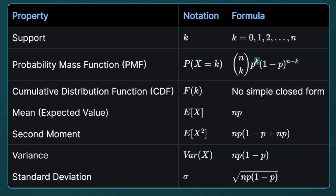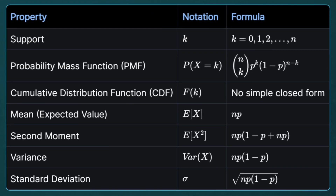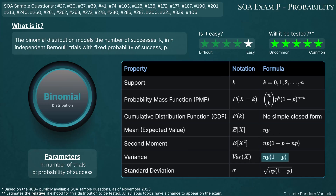Since there are k successes, there must be n minus k failures, and the probability of failure is 1 minus p. So the probability of n minus k failures all occurring is 1 minus p raised to the n minus k. We multiply these probabilities together and also multiply by the binomial coefficient n choose k, because the binomial distribution doesn't specify the order in which the k successes and n minus k failures occur. The CDF for a binomial distribution doesn't have a simple closed form solution, so you'll probably have to sum up individual PMF results. The expected value is n times p, and the variance is n times p times quantity 1 minus p — you definitely want to know these by heart.